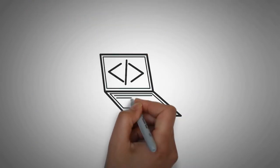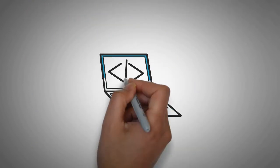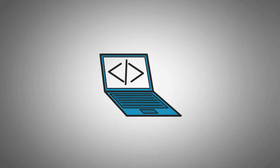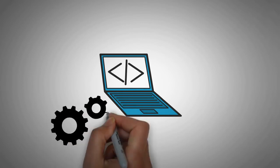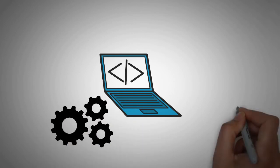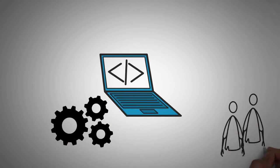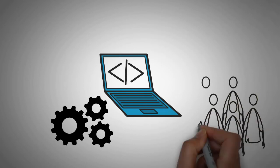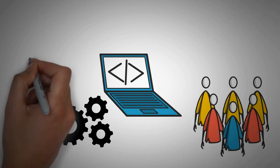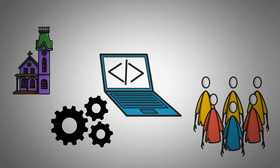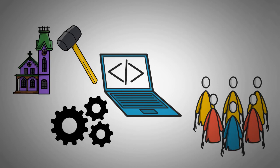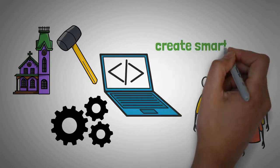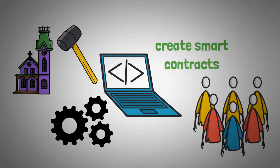Solidity and Go are both programming languages that serve different purposes within the Ethereum ecosystem. Think of programming languages as the tools that developers use to build things. Just like a house can be built with a hammer or a screwdriver, different programming languages can be used to create smart contracts.